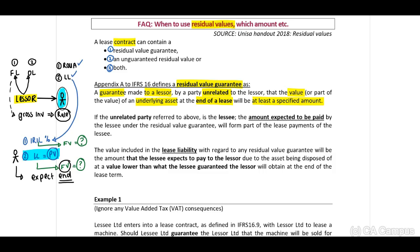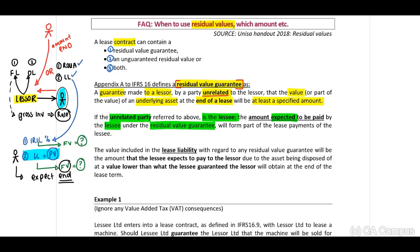Residual value guarantee: they indicate to us that this is the amount that an unrelated party guarantees to the lessor. Look at our scenario on your left side screen. Therefore, this can be another party - this red party can provide a guarantee in terms of an amount that will be paid at the end of the lease term. Importantly, this can also be your lessee. Therefore, the unrelated party referred to above - if it is the lessee, the amount expected to be paid by the lessee under the residual value guarantee will form part of the lease payments of the lease.